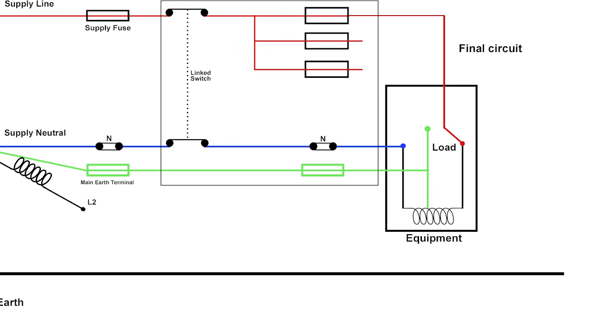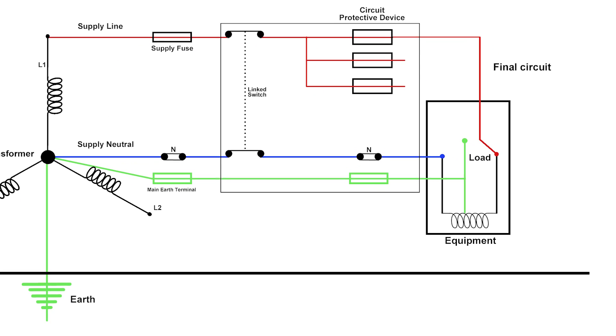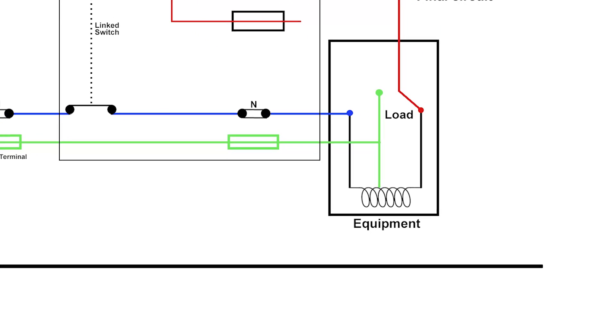Our system really begins with our supply transformer, which you'll find at the end of most rows or sometimes they're up on a pole somewhere. It supplies a voltage to us at between two phases of 400 volts, or for us in particular for this explanation, we're looking at 230 volts. A single phase is 230 volts.